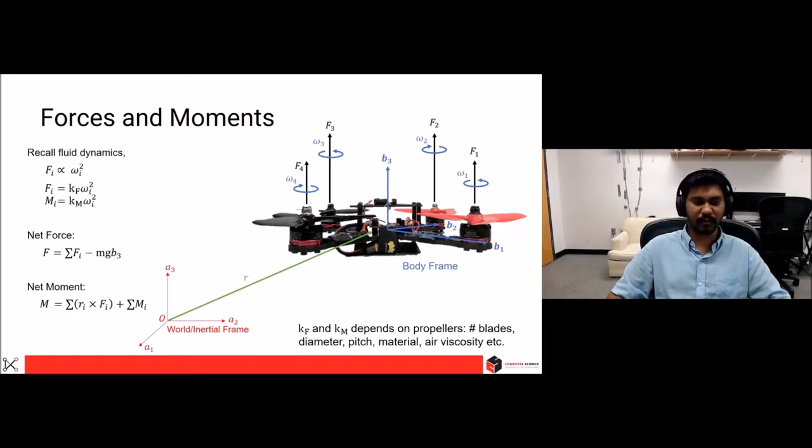So more formally put, the direct proportionality can be put as follows. So the force is some constant Kf into omega squared. And the moment is some constant Km into omega squared.